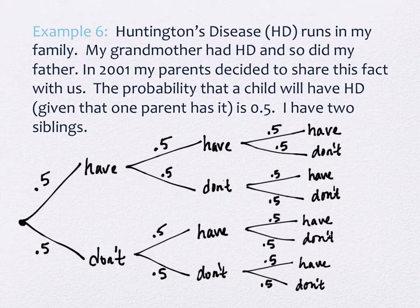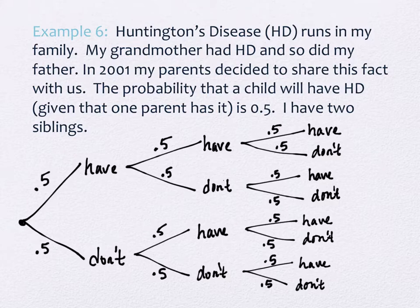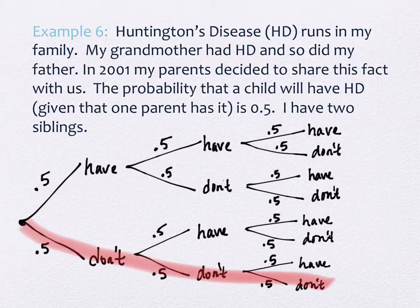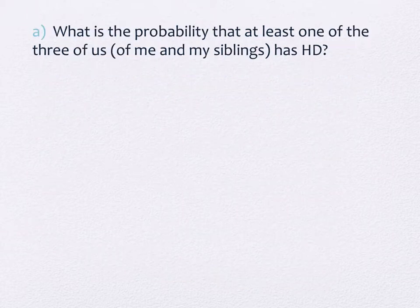The first question — and this is actually the math I did in my mind that night — is: what is the probability that at least one of the three of us has this disease? I mean, it's fine if I do or don't, but what about everybody else? How does this affect my family at large? If you look at the branches where at least one of us has it, there are a lot of them — all but one. The only branch where none of us have it is the one where we're all in the clear.